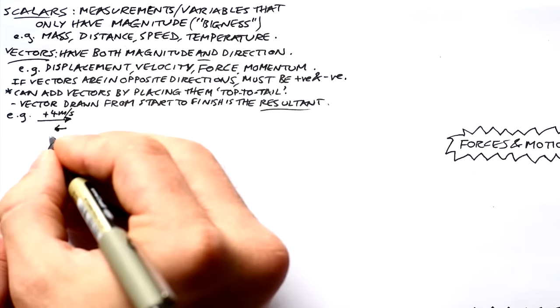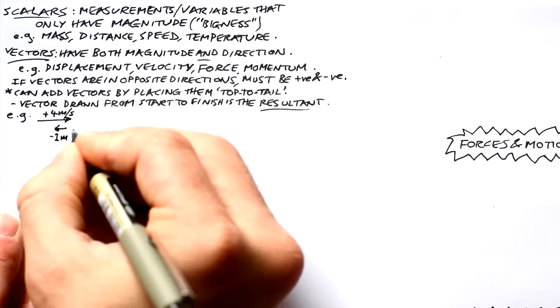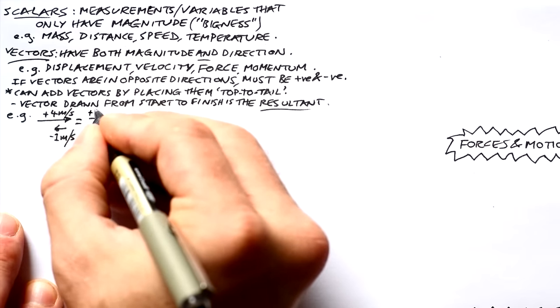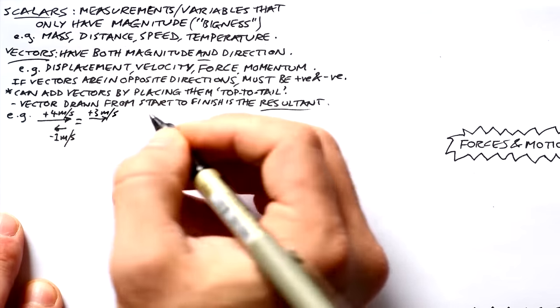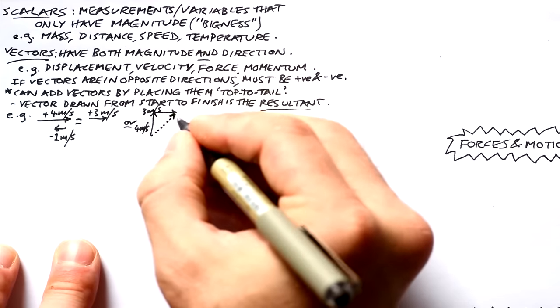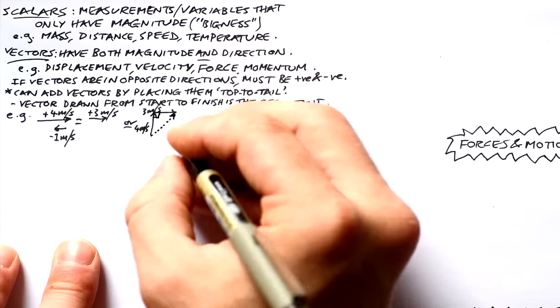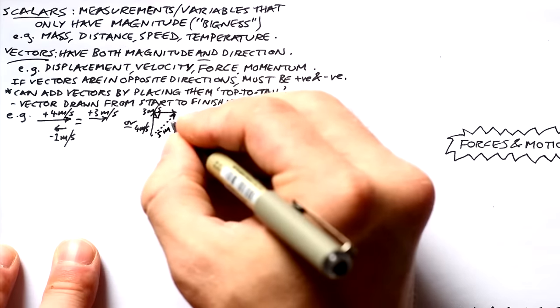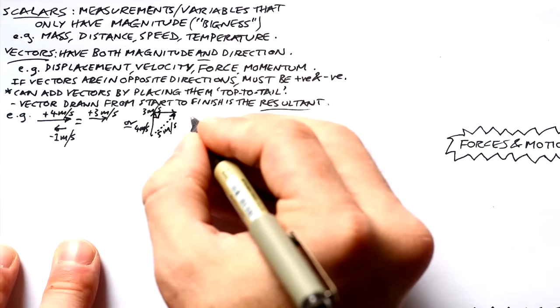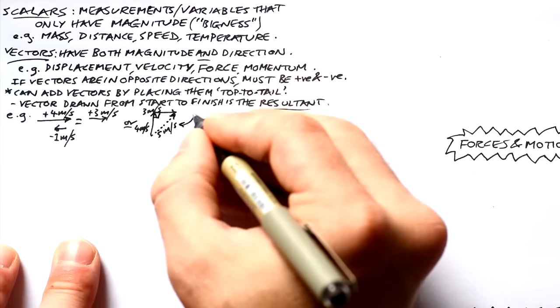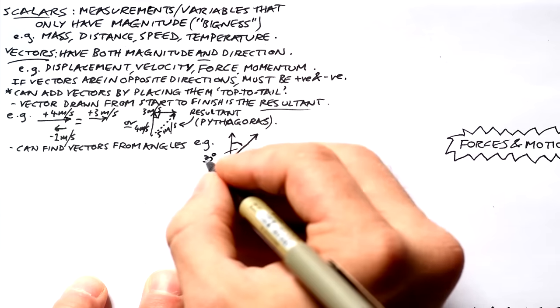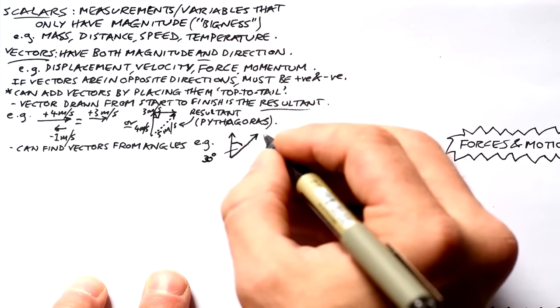Regardless of what kind of vectors they are, we can always find the resultant or overall vector by adding them up, and we do that by placing them top to tail. If they're on the same line, let's say we got something going at four meters per second but the wind in the opposite direction is one meter per second, that means the resultant vector is going to be plus three meters per second. If we're dealing with 2D vectors then we need to top and tail them. Hopefully they will be at right angles and then we can use Pythagoras to find the resultant vector.